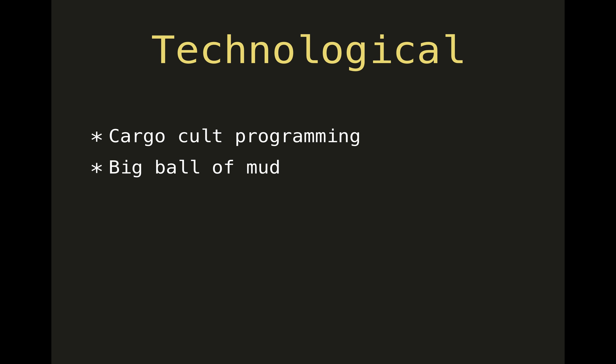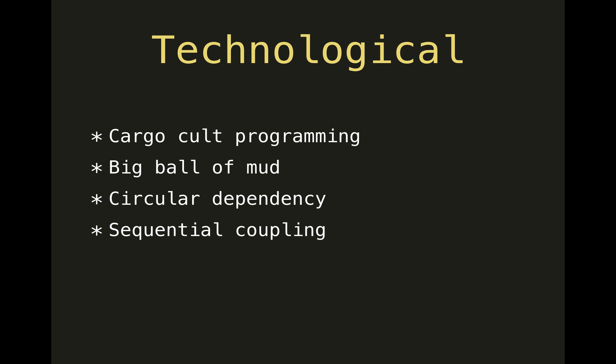Big ball of mud is an anti-pattern when you put all things in one place — one class, one package, or even one method. Circular dependency is when several things depend on each other, meaning that whenever you want to change one of them, you need to evolve all of them simultaneously, and you have to make the entire system consistent again — which is much harder than updating one thing and propagating updates along dependencies.